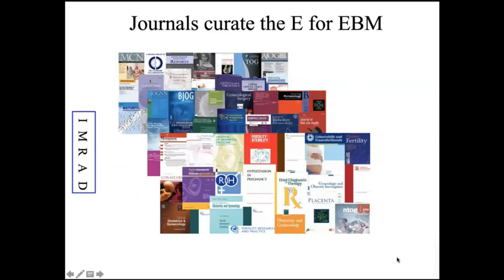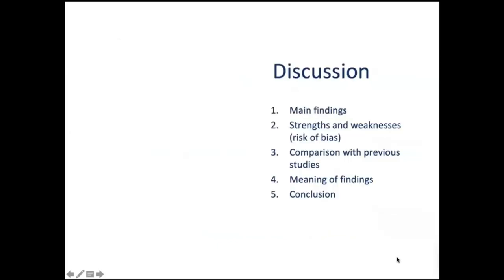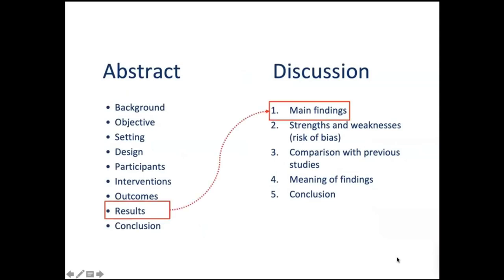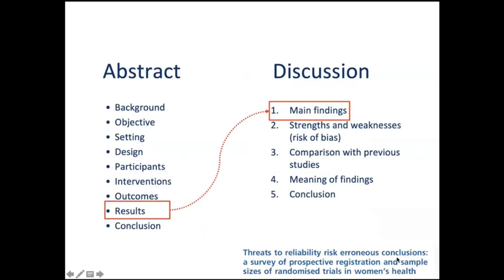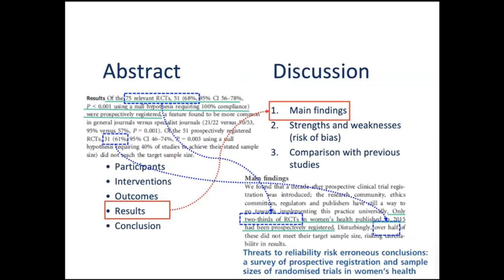Coming to the discussion, the key thing is that it should also be structured like the abstract. Using guidance from a published paper, we can think of four subheadings: main findings, strengths, weaknesses, comparison, meanings of findings, and conclusion. The main findings come from the results reported in the abstract. How to convert numbers into words is the trick — for example, you take 68% from the abstract and call it 'two thirds.' This conversion follows naturally.